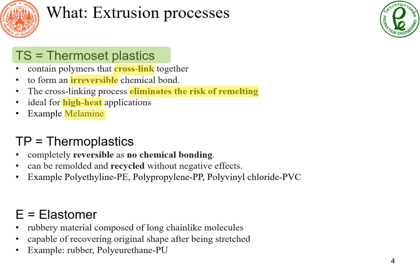TS stands for thermoset plastics. It contains polymers that cross-link together. This cross-linking makes it difficult to untangle or reorganize the polymer chain. Thus, TS has irreversible chemical bonds. It is also difficult to remelt and very heat resistant. An obvious example is melamine, which is used for plastic plates or bowls.